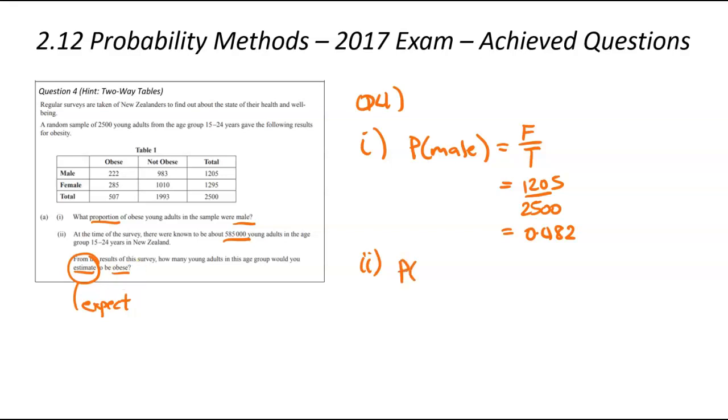The first thing we need is to find the probability that a random young adult in this age group is going to be obese. We're going to use our F over T approach again. There are two and a half thousand people in total, and how many of them are obese? The obese group is up here, 507 of them. So that becomes 507. We plug that into our calculator, and we're going to get 0.2028.